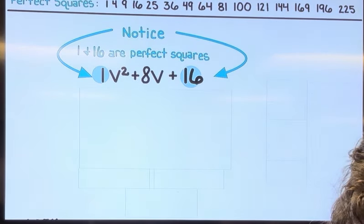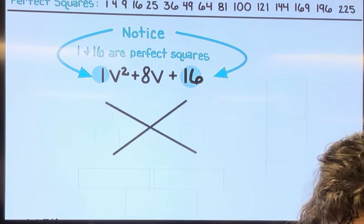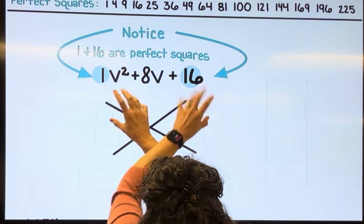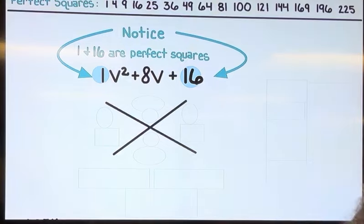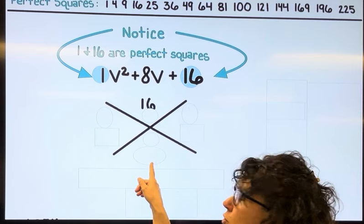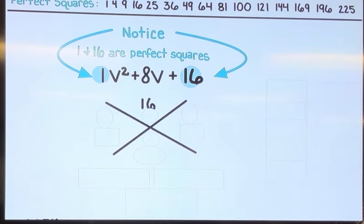We go ahead and start the factoring the same way. We're going to grab the numbers on the outside, 1 and 16, multiply them together, and write it up here. So 1 times 16 is 16. We're going to take the number in the middle, drop that straight down, so I have 8.